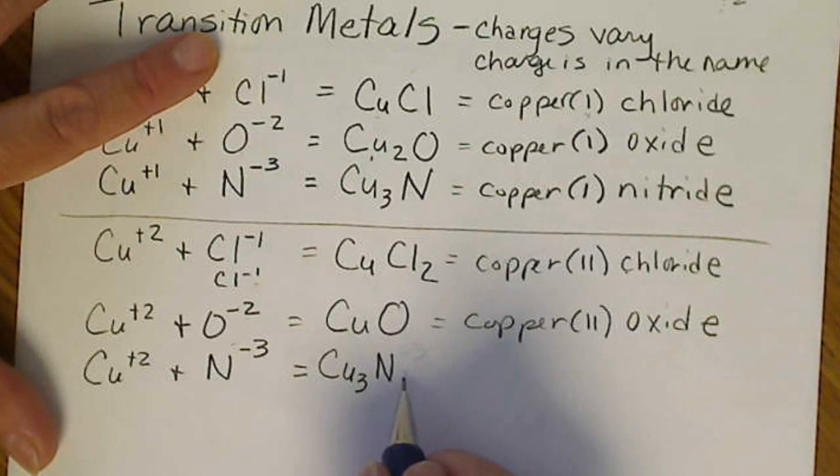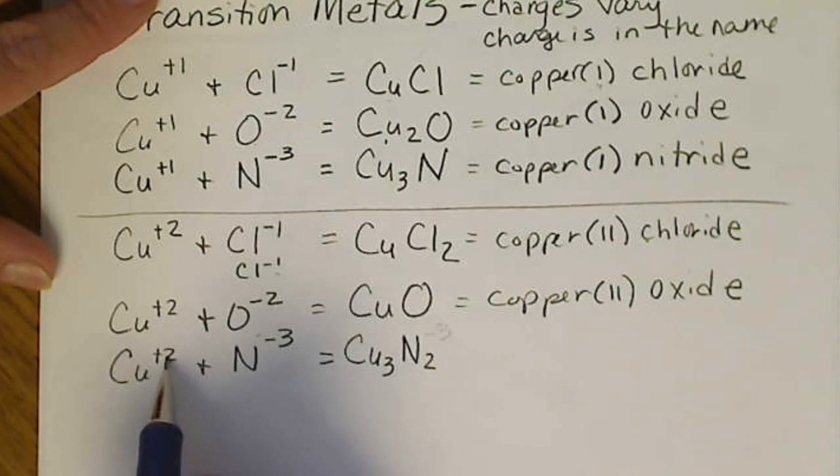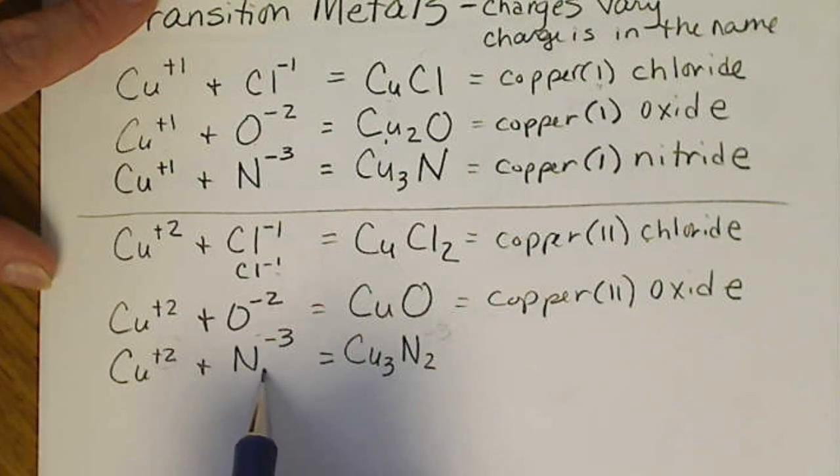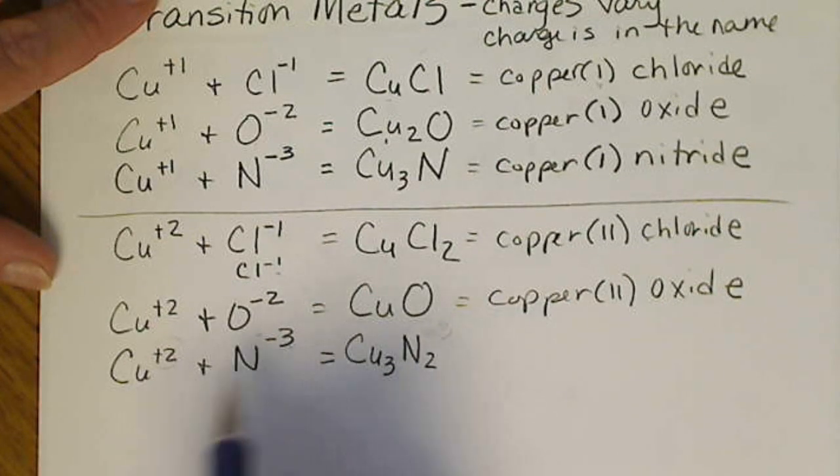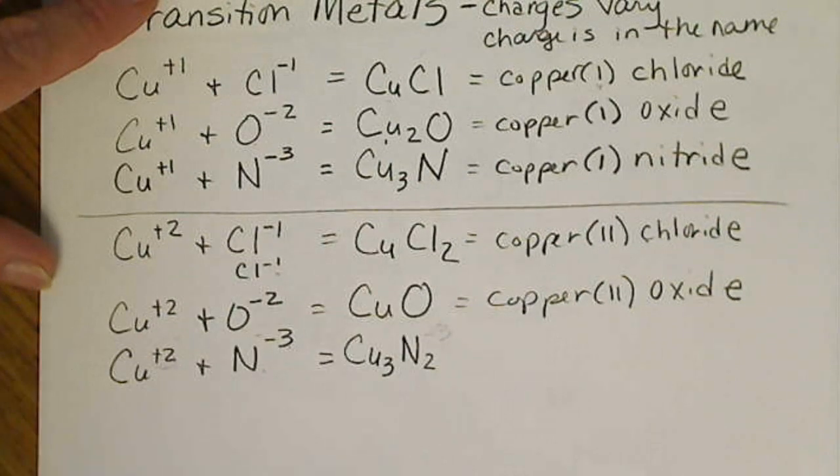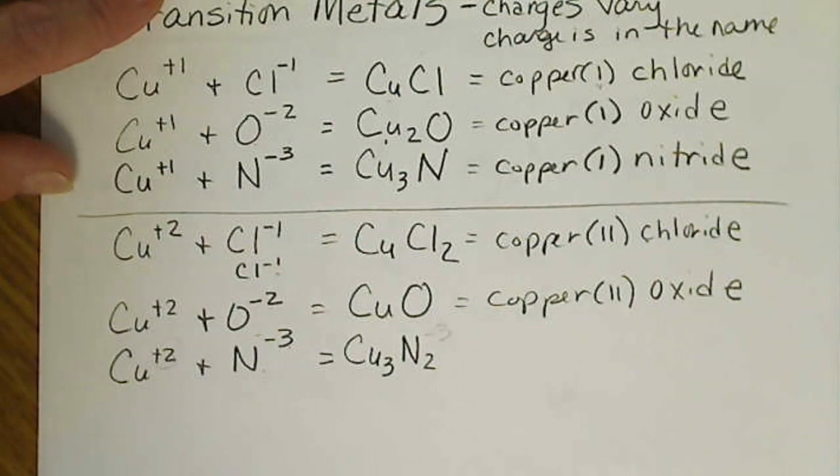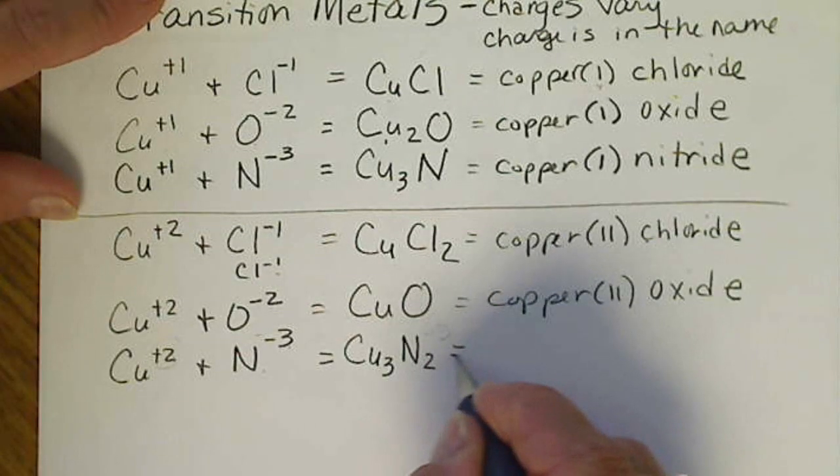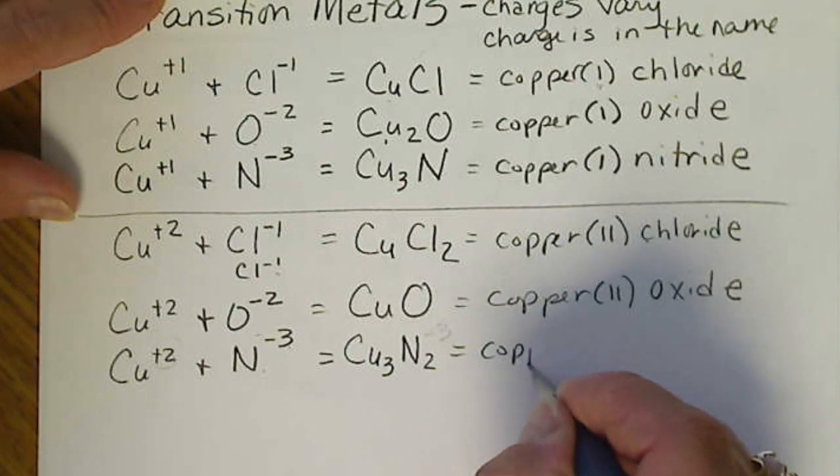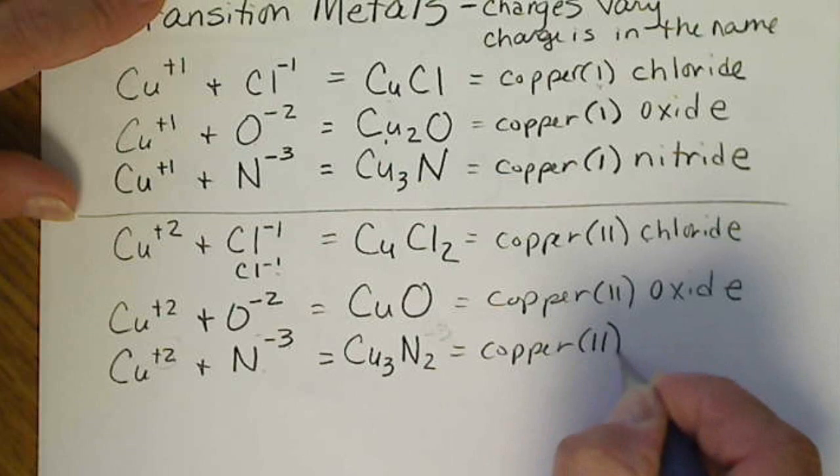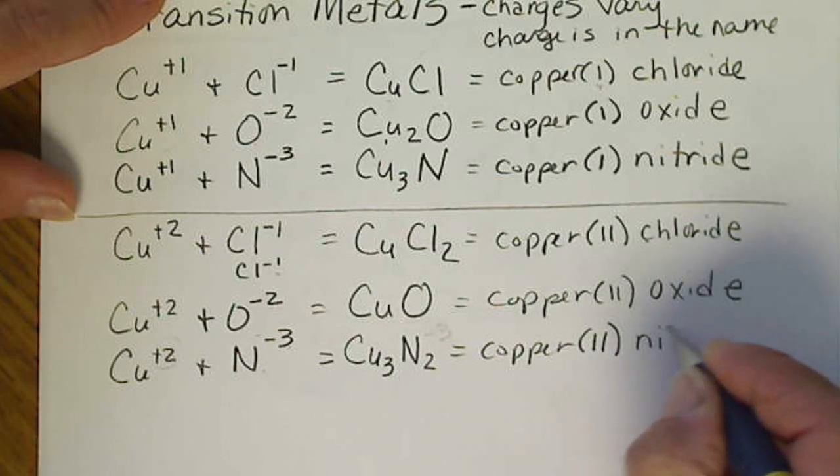So I was thinking, that's where the 2 goes. That charge, we can put over here. And this charge, we can put over here. That's so that our brain doesn't have to think about the math. It's just a trick. This is copper 2 nitride.